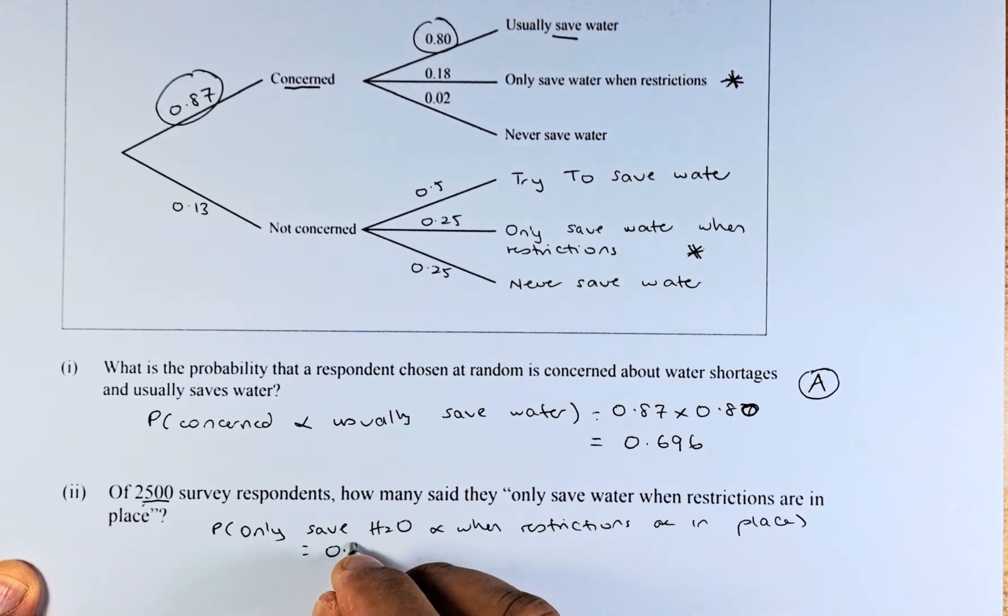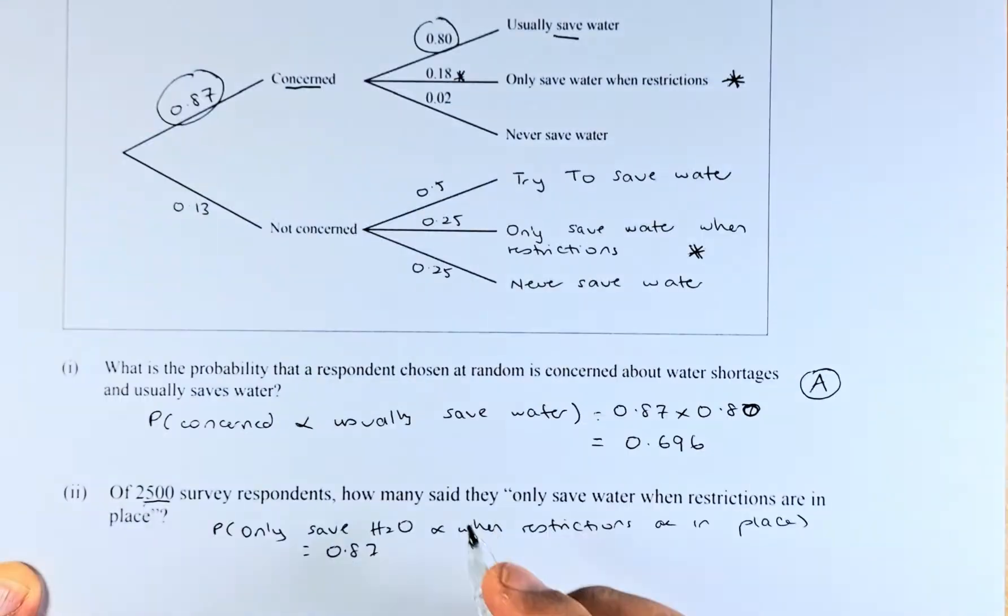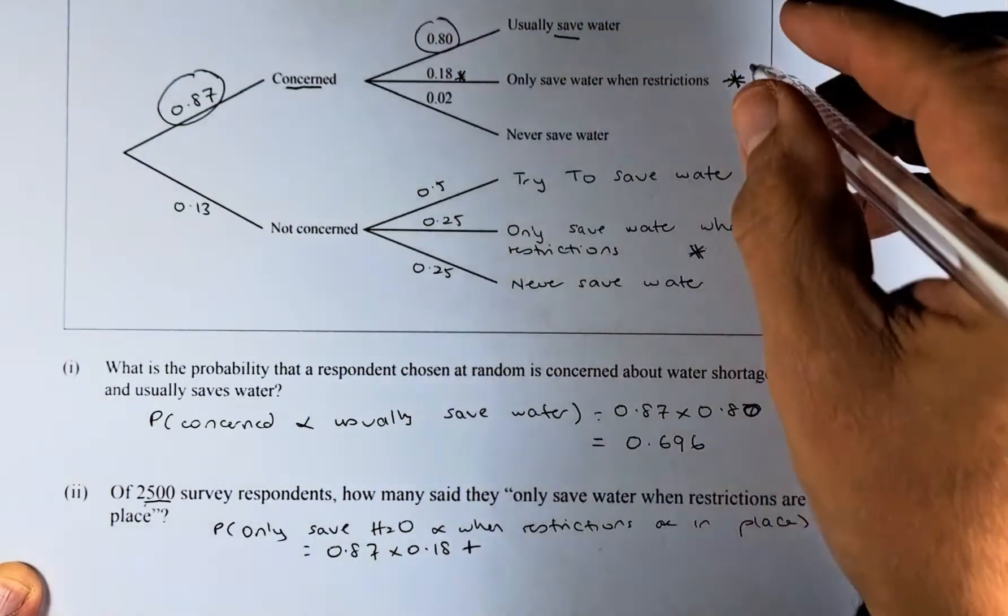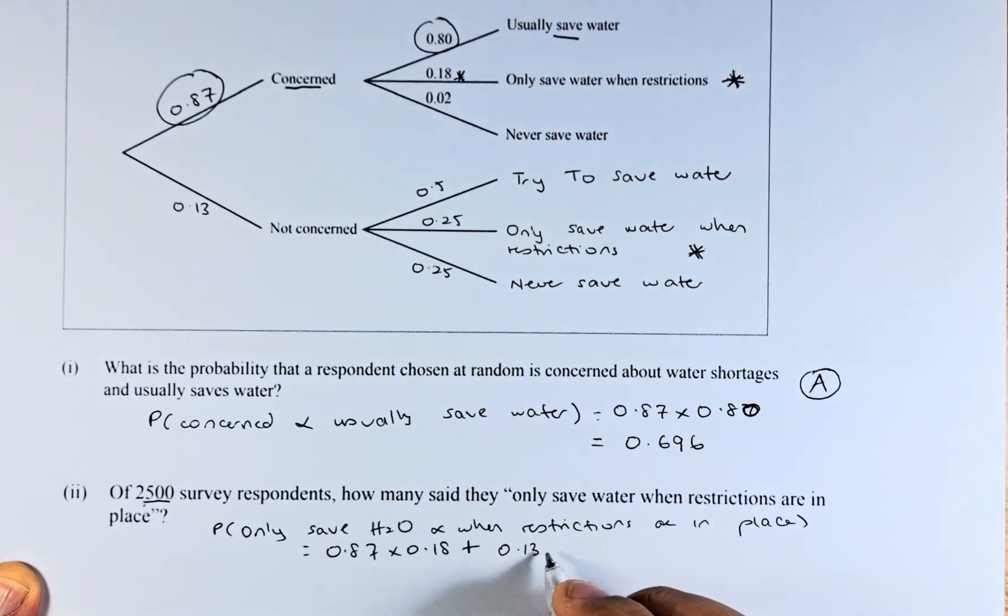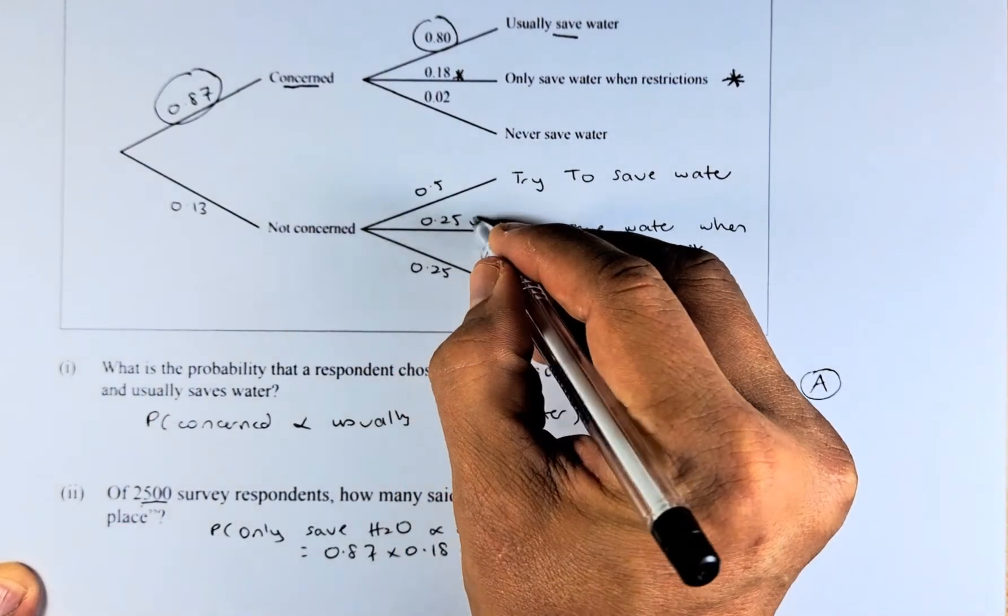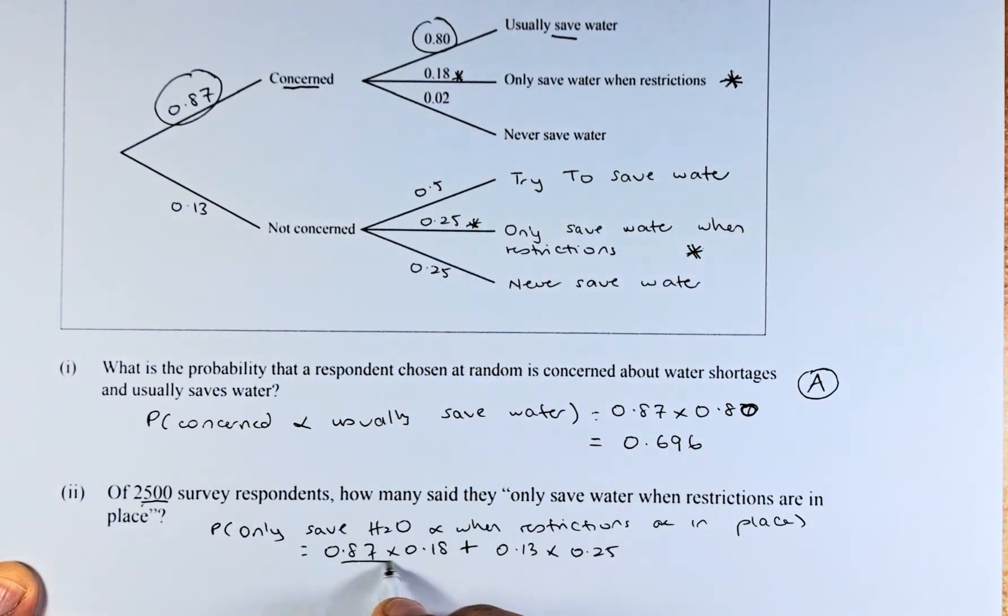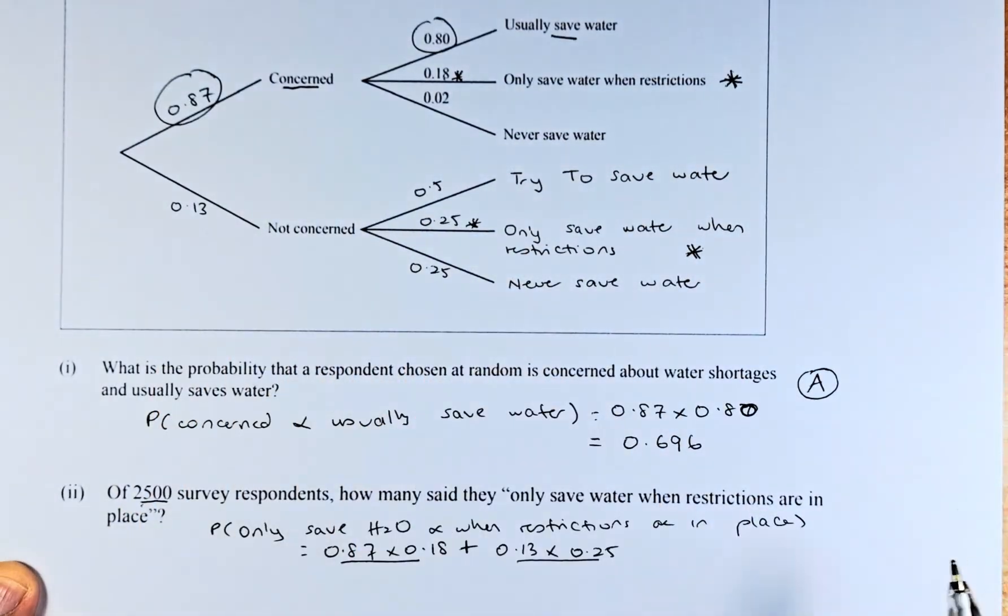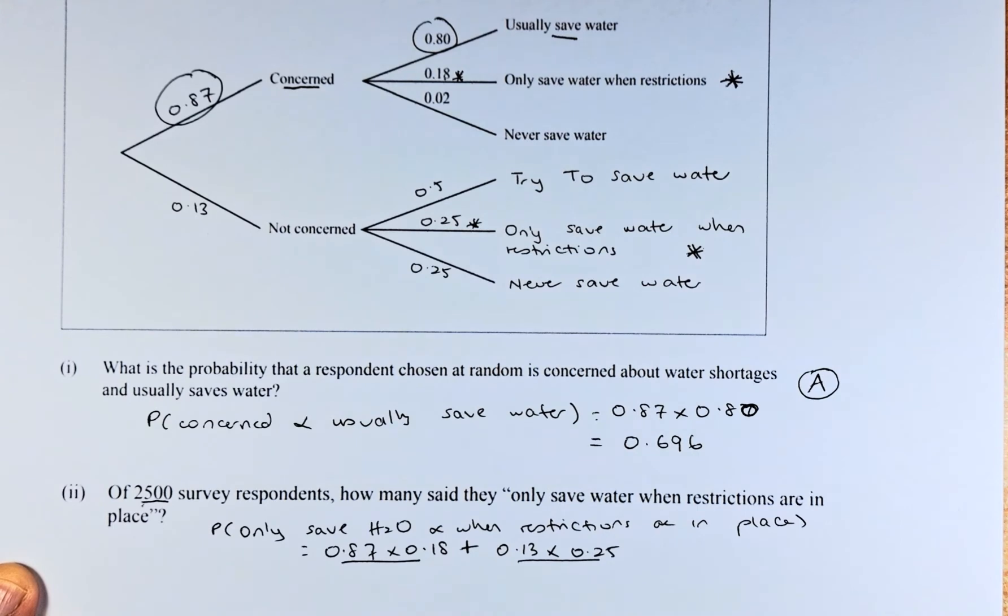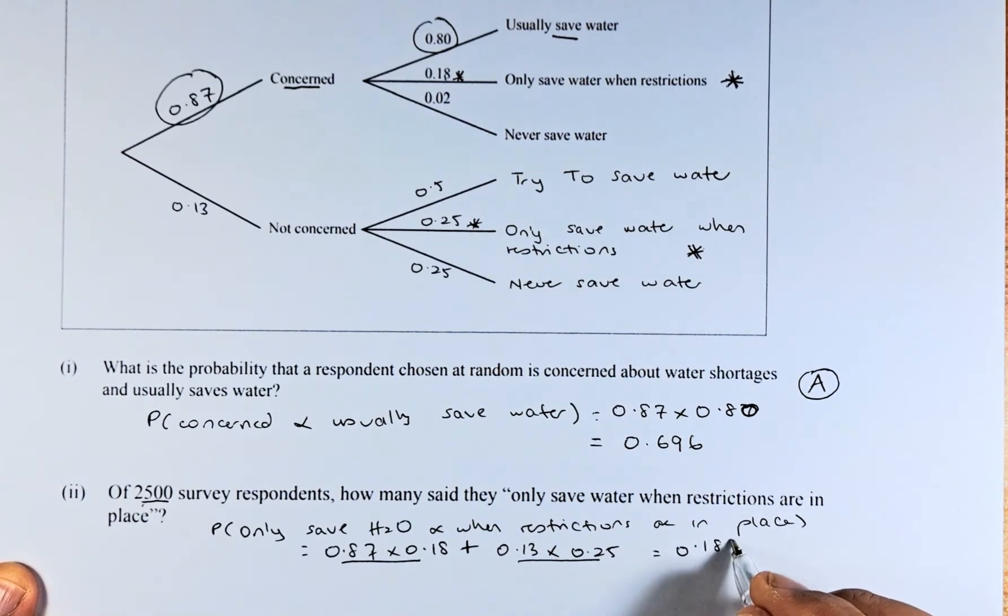So, it is going to be 0.87 here, multiplied by this number here, 0.18, plus, because it is either this or this, plus 0.13, multiplied by this number here, 0.25. So, this times this, plus this times this. Once you have done that, put in your calculator and the answer should come up to 0.1891.